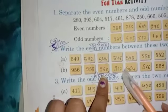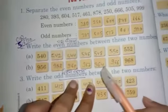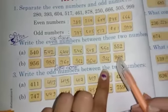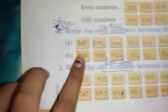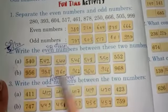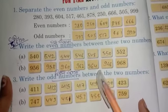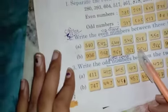964 and then 965 will not be included, then 966, and here it is written up to 968. Between 956 and 968, I have written all the numbers: 958, 960, 962, 964, 966. This is how I have written them, one by one.